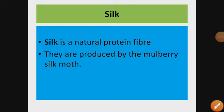Good morning students. Today we will start the chapter Fiber to Fabric. We have already studied about wool, which is an animal fiber. Another animal fiber is silk. Silk is a natural protein fiber produced by the mulberry silk moth. There is a basic difference between animal and plant fibers — animal fibers are rich in protein.